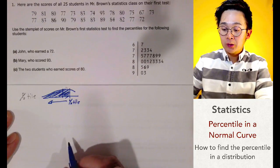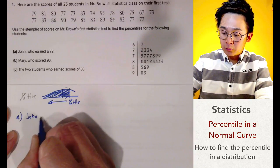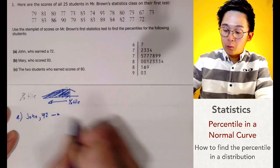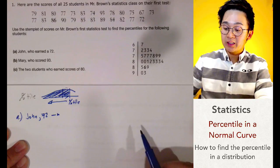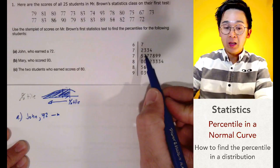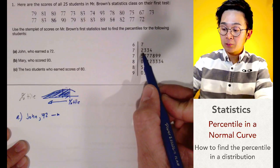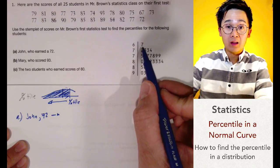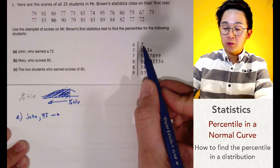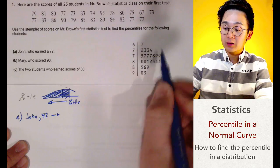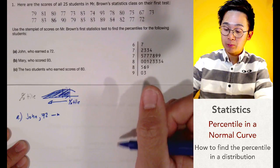For this particular distribution, John scored 72. What will be John's percentile if he scored 72 on the statistics test? By looking at the stem plot, 72 places him at a position where there is one student who has a score lower than him, which is 67. So one out of 25 students scored lower than John — that gives us his percentile.